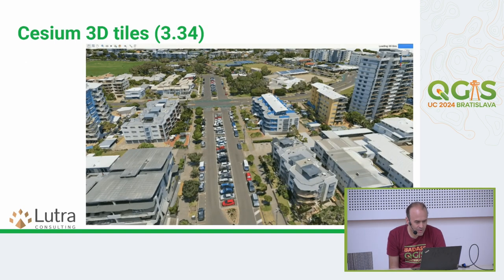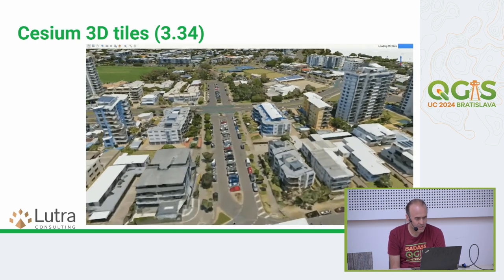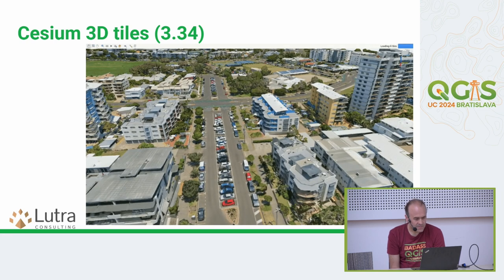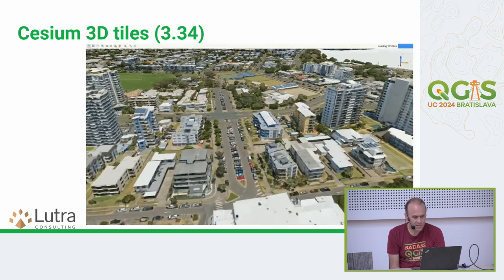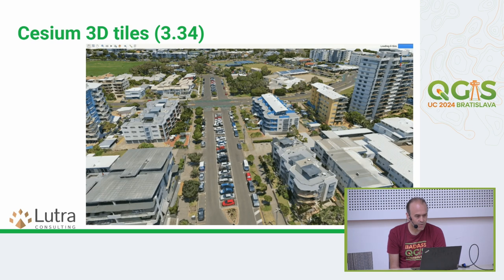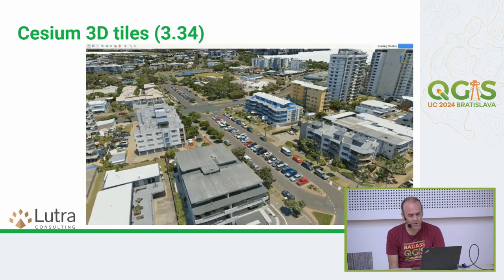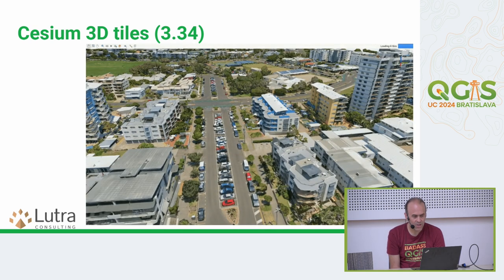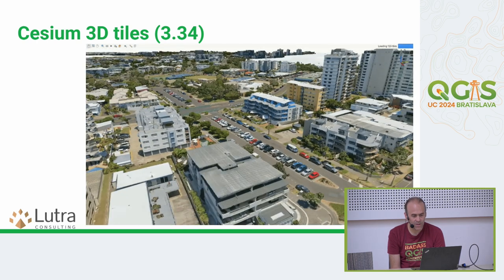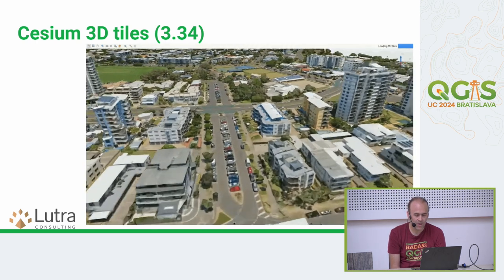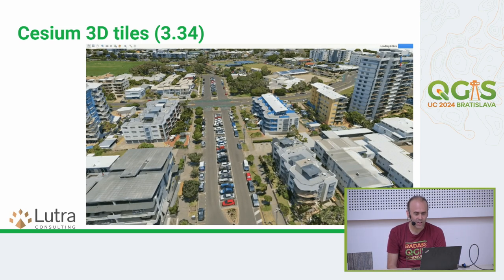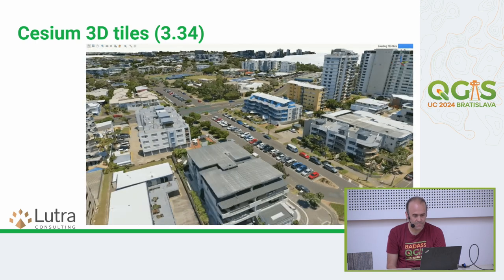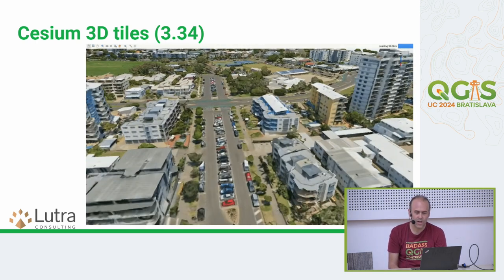In 3.34, a big change was introduced: Cesium 3D Tiles support, again in collaboration with Northroad. This was sponsored by the Cesium grant and lets you load 3D tiles streamed over the internet. Google Earth also shares its data in this format, so if you have an API key you can actually add a Google Earth 3D layer in QGIS and use it both in the 2D view and in the 3D view.